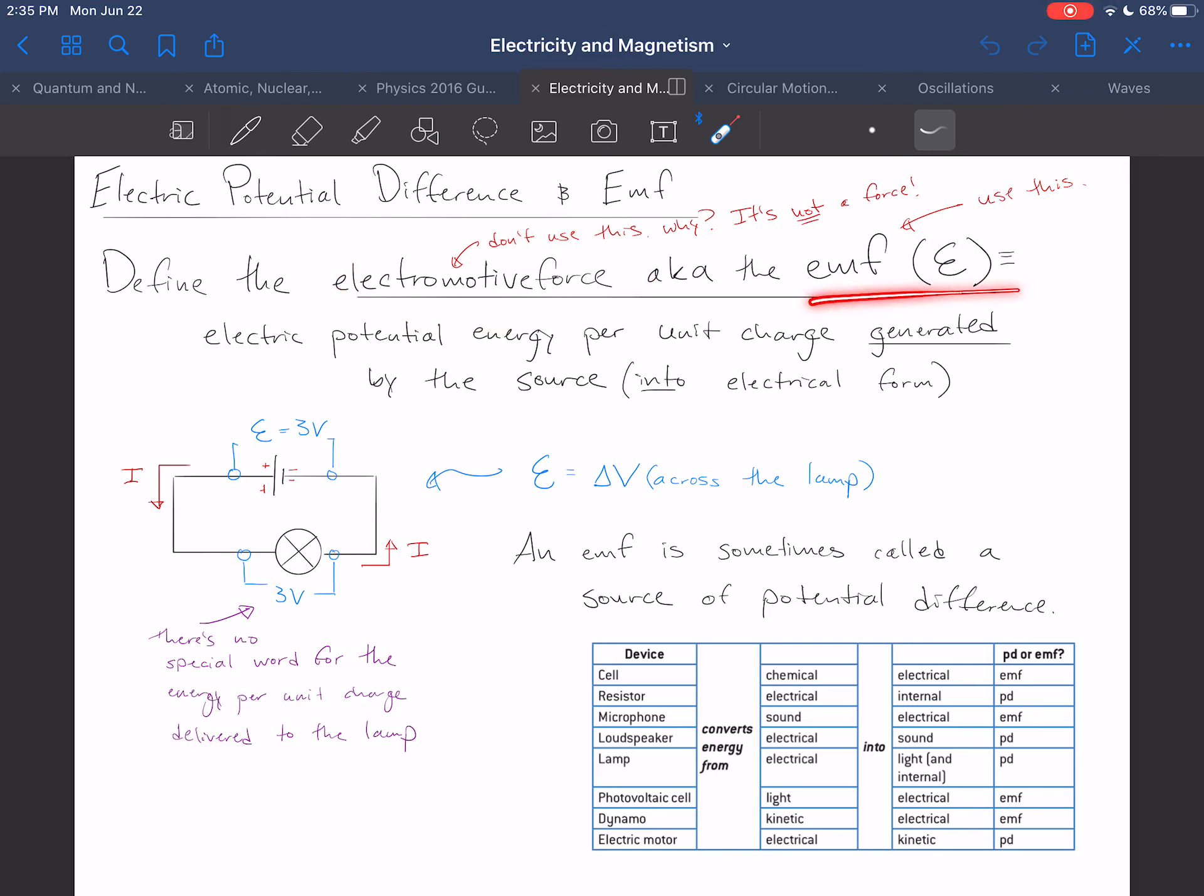We're going to call it the EMF. And it's given this symbol here, this sort of backwards three, or an epsilon-looking thing. And you say it out loud as the EMF. And the EMF is the electric potential energy per unit charge generated by the source. And the emphasis here is that it's generated.